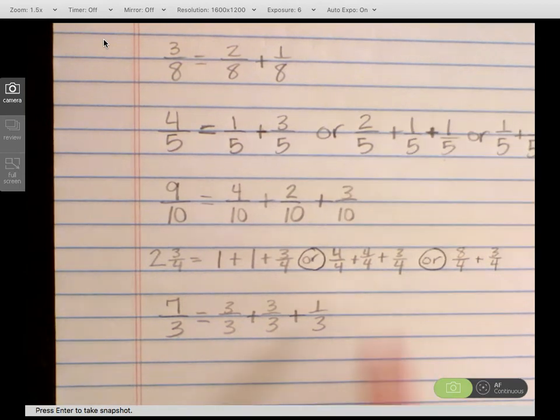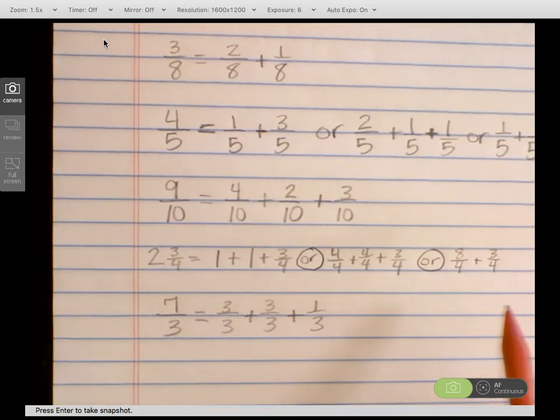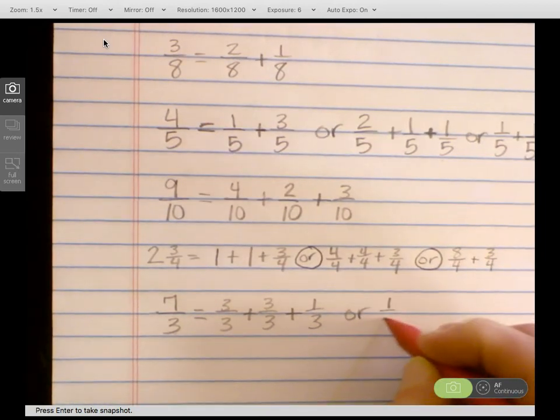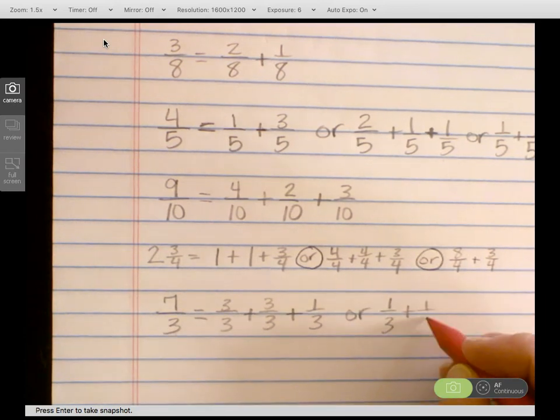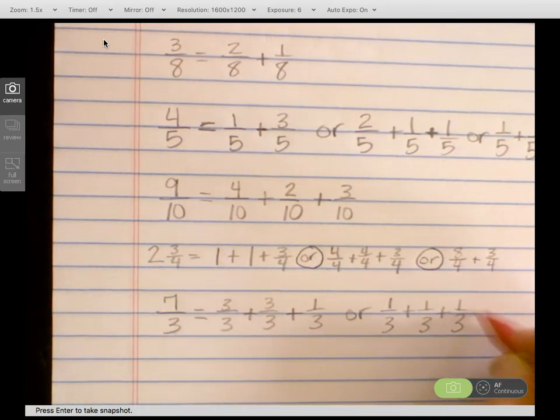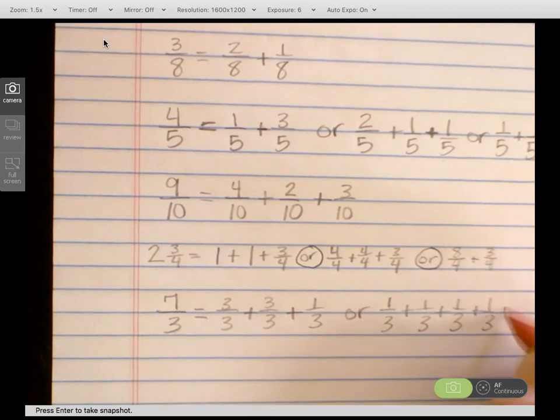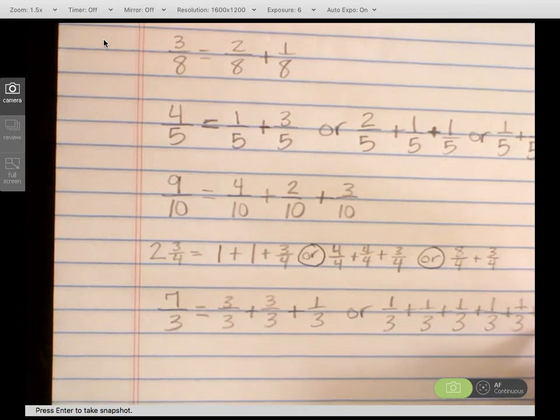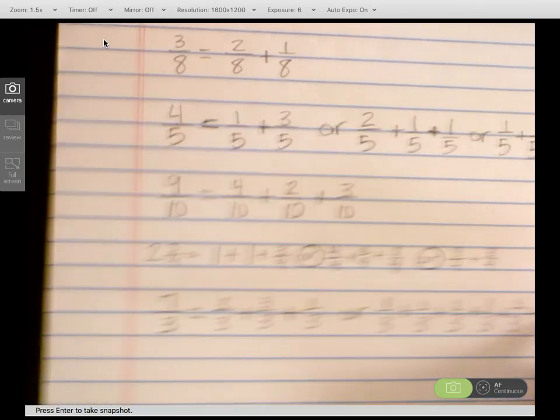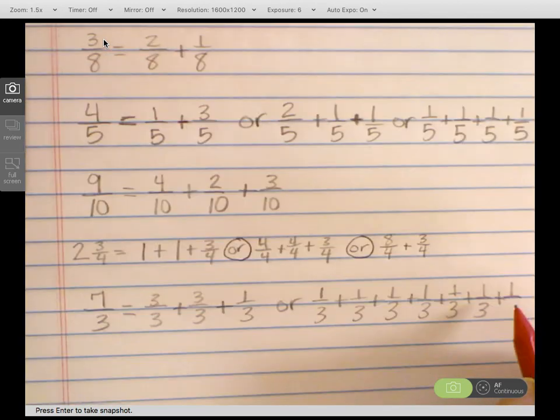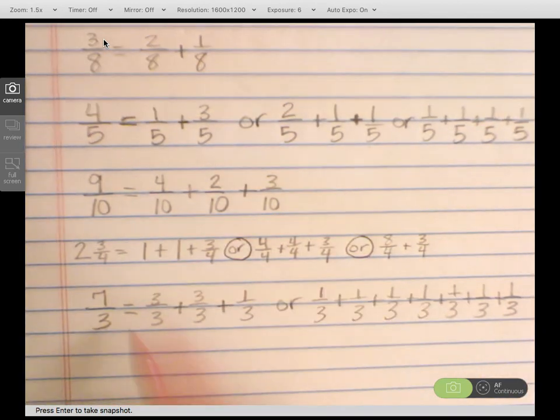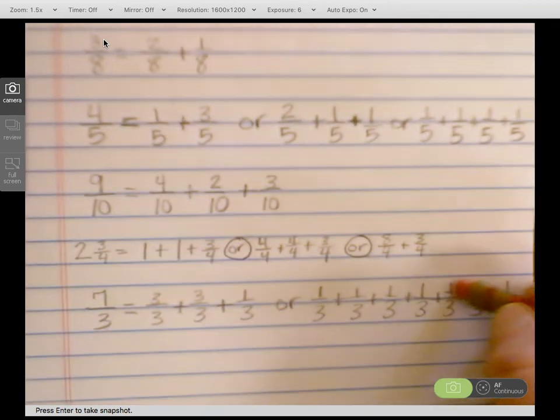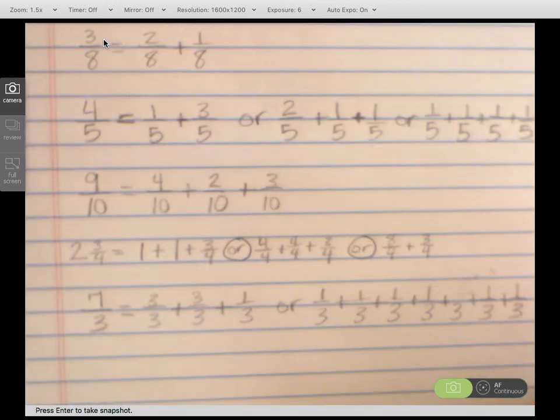Or you could decompose it using your unit fractions and have 1 third repeated until it equaled 7 thirds. That might look like this. It's a little time consuming, but it would still be correct. Let's make sure I have all the fractions that I need to equal 7 thirds. So we would have 1, 2, 3, 4, 5, 6, 7. And we don't want a plus sign to be a numerator.